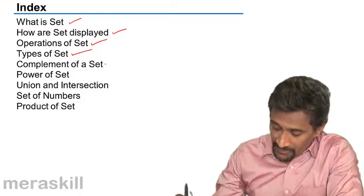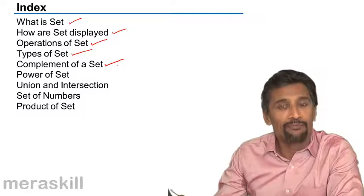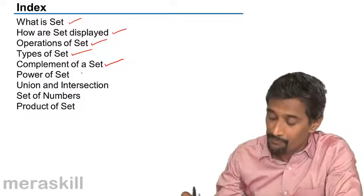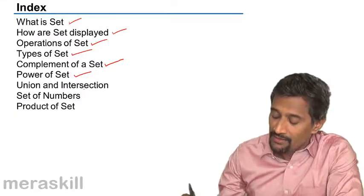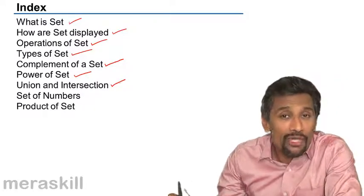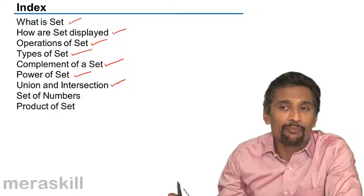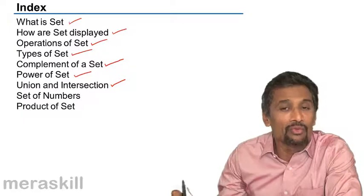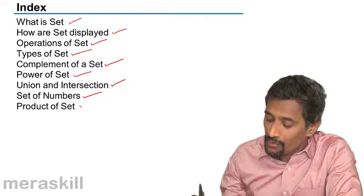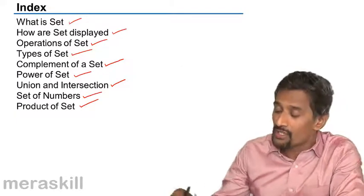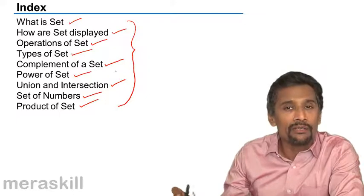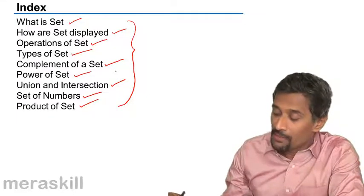We have things like infinite set, finite set, singleton set, empty set. Then we understand the complement of a set - if a given set you have and you compare it to the bigger set, how do you find the complement? Then we have the power of a set. Then you have union and intersection of a set. If two sets we have, for one set you cannot have a union - minimum you need is two sets. So what is the union of two sets? When you unite two sets, what do we get? Then various types of numbers - sets of various types of numbers - and also we want to talk about product of sets. These are the various topics which we intend to cover.